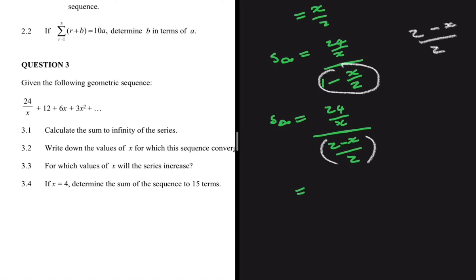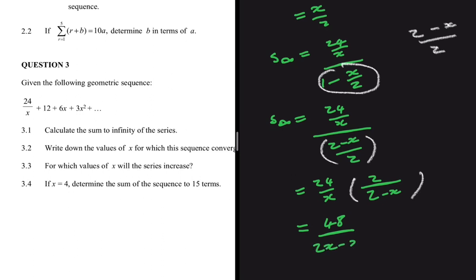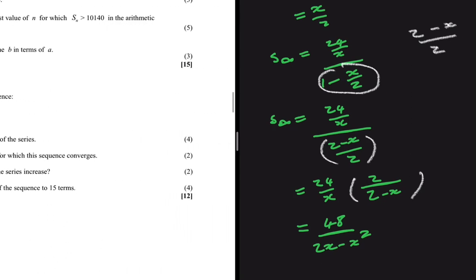Instead of dividing, let's multiply — the numerator goes to the denominator and the denominator to the numerator. So we have (24/x) multiplied by (2/(2 minus x)). Multiplying numerators and denominators together gives 48 divided by (2x minus x²). That is the sum to infinity for question 3.1, which is out of 4 marks.